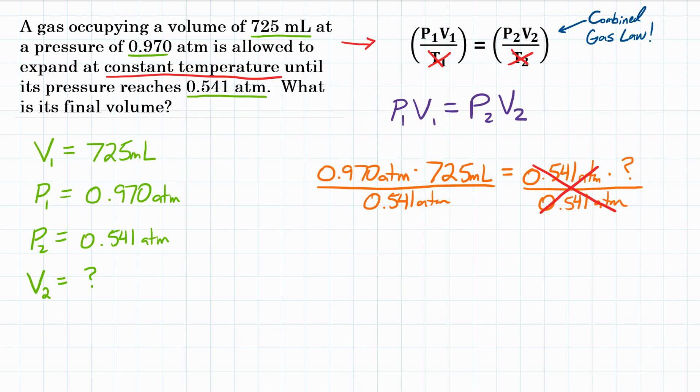So now if we do the math, we're going to punch in our calculator. 0.970 times 725 divided by 0.541, and we get about 1,299.9, let's call it 1,300. So there's our number, but what is our unit going to be? Well, we have atmospheres on top and on bottom, so they're going to cancel out. And we're going to be left with just milliliters. So, 1,300 milliliters. All right, so what is the final volume? 1,300 milliliters.